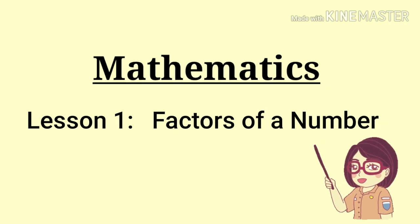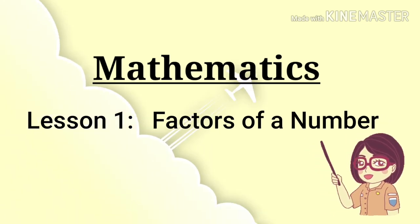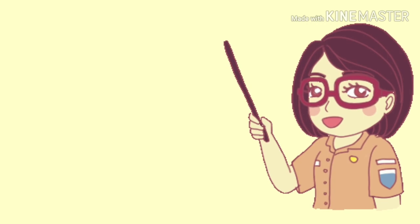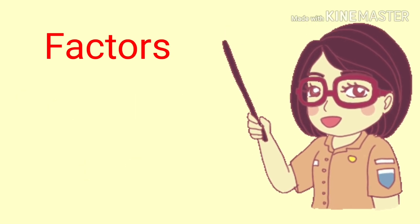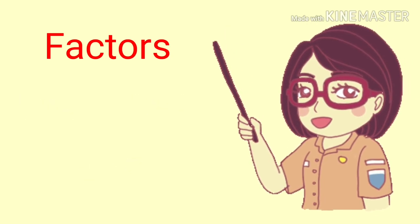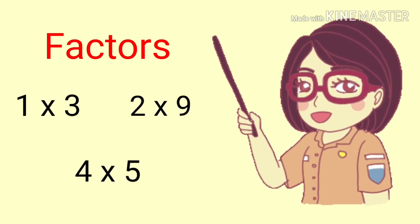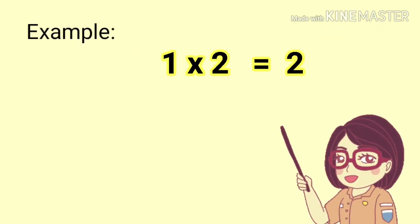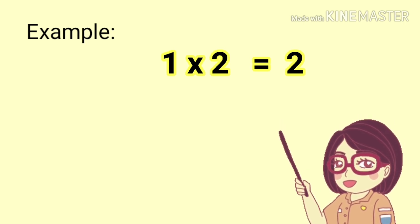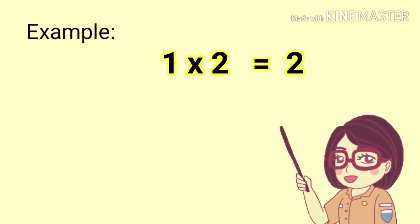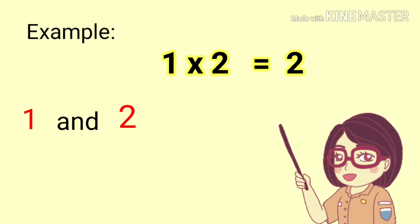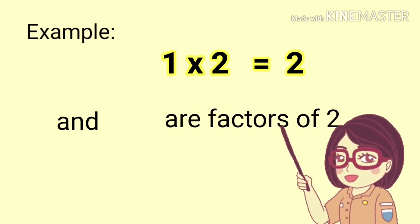Today's video is about factors of a number. So what are factors? These are numbers which you can multiply together to get another number. For example, 1 times 2 is equal to 2. The numbers 1 and 2 are factors of 2.